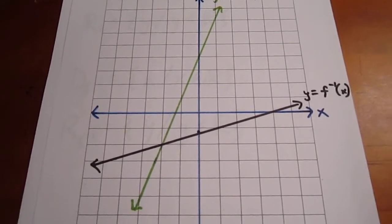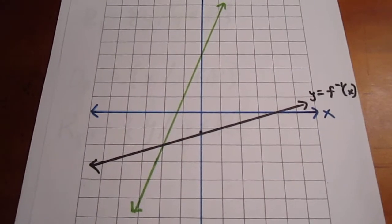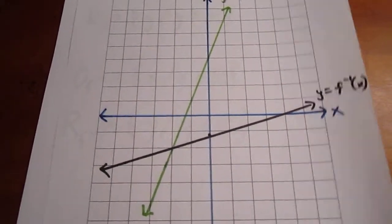Then the flatter curve, the black one, the inverse, has the same domain and the same range. There we go.